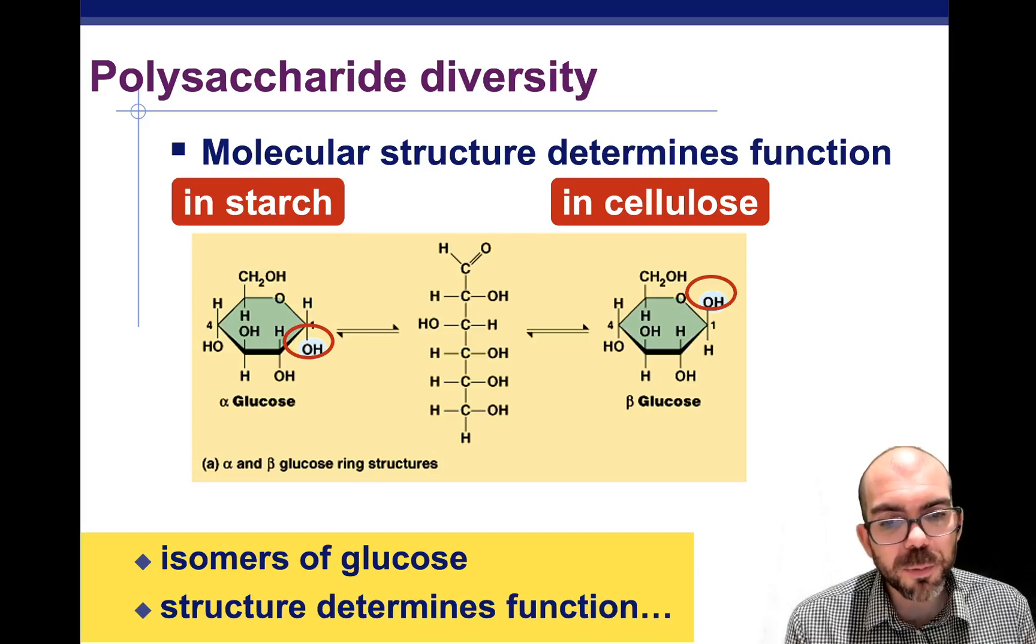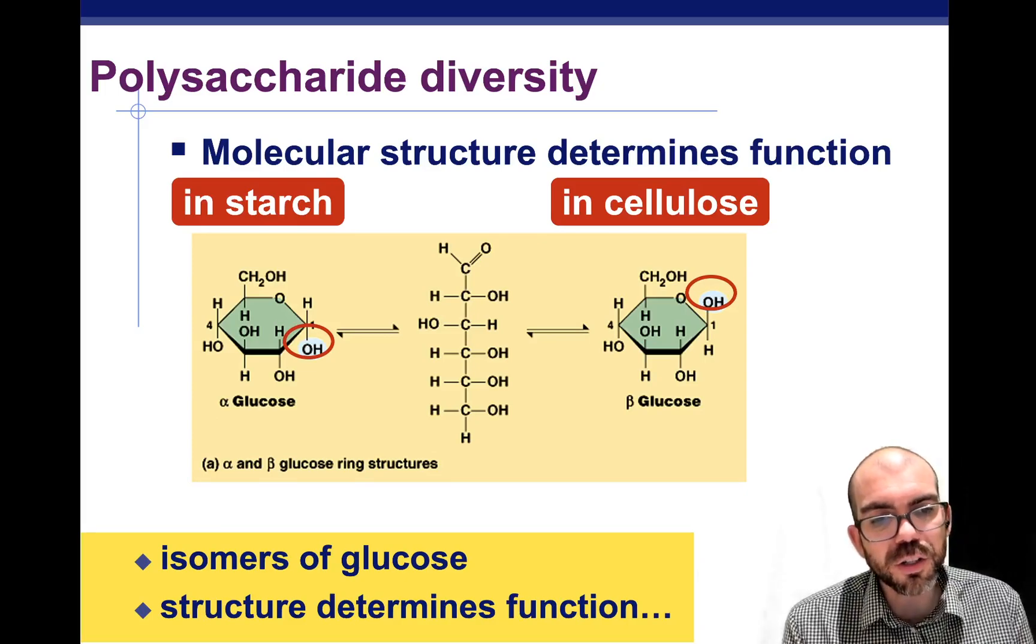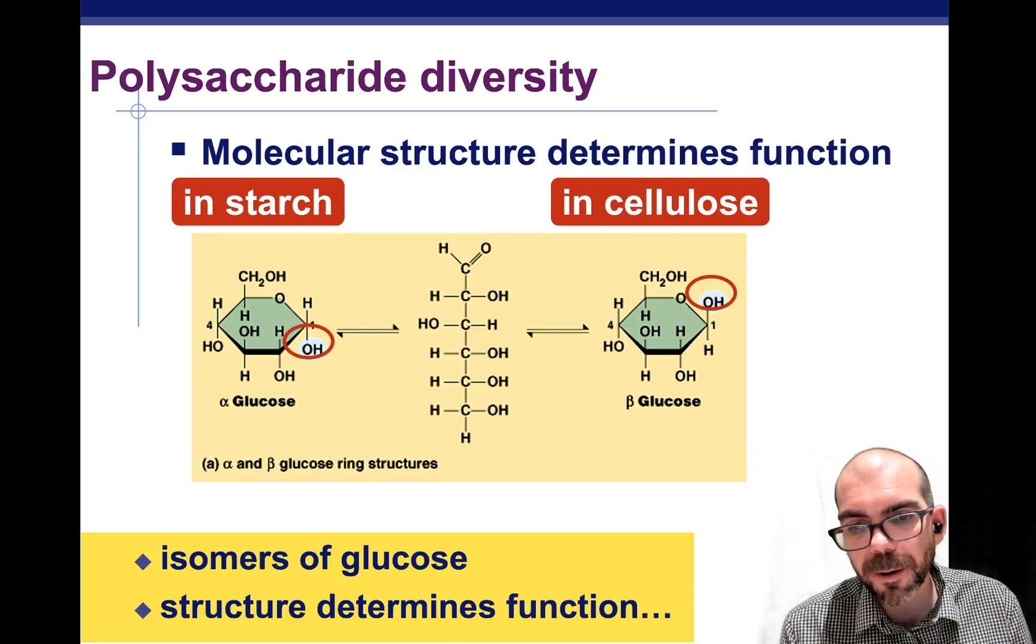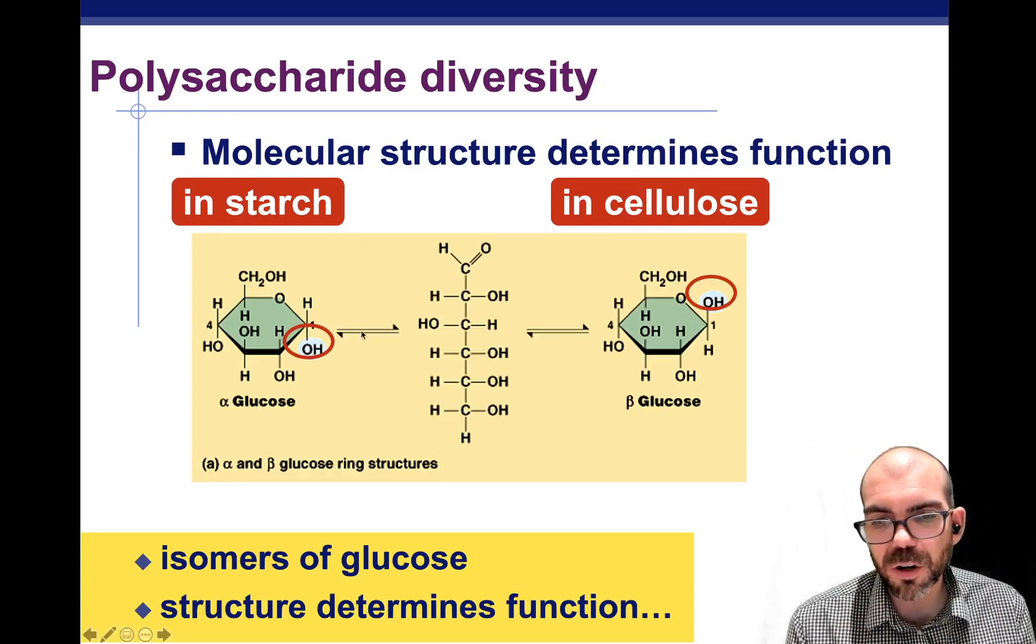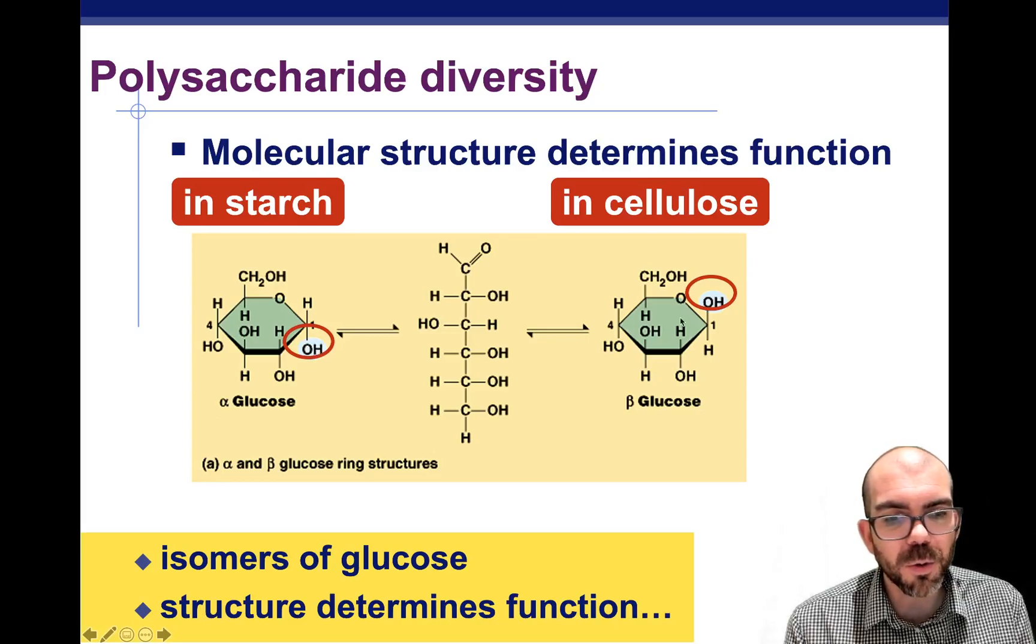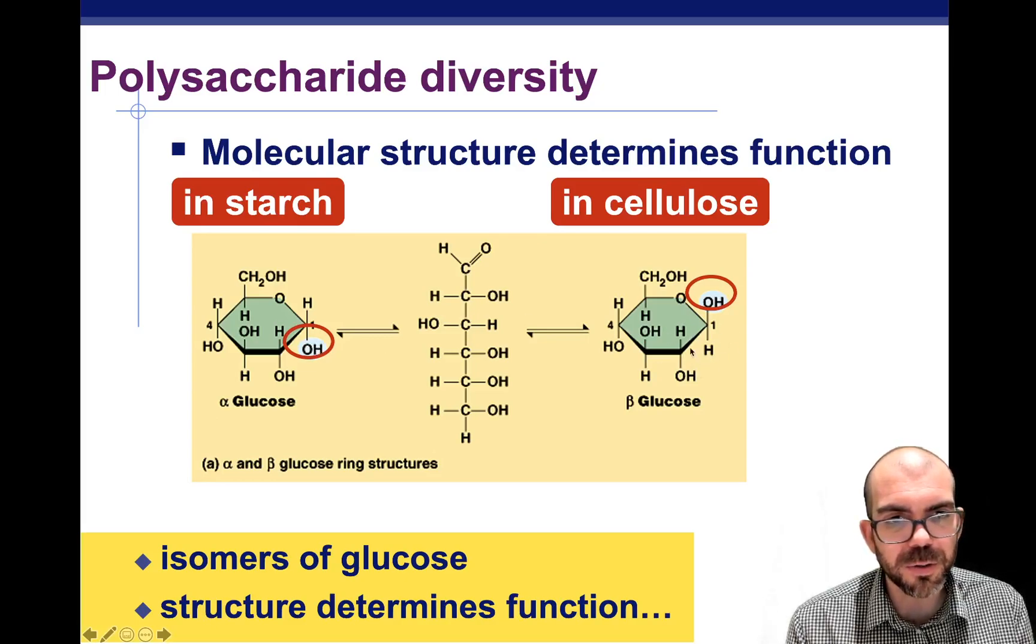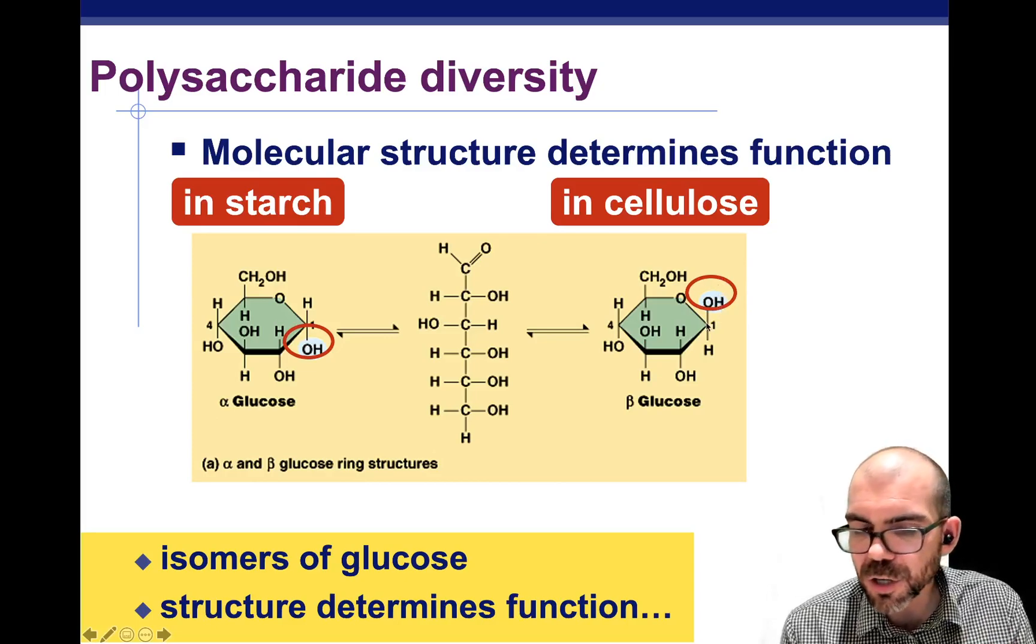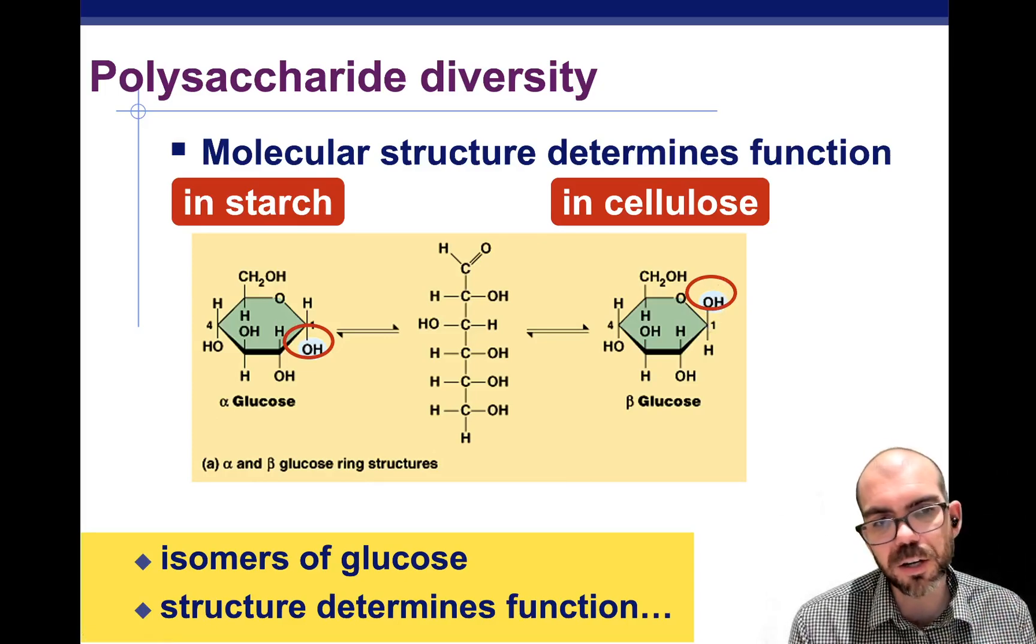There are common isomers in carbohydrates. Here you can see in starch, the OH group is on the bottom. Whereas with this beta glucose here in cellulose, it is pointing upward. Anytime there's a change in the structure, there is a change in the function.